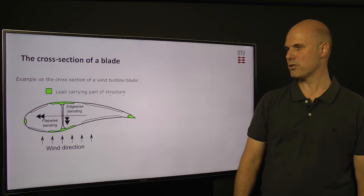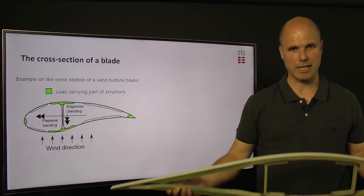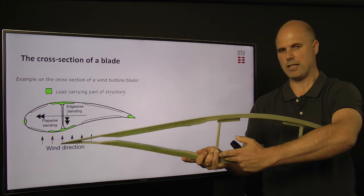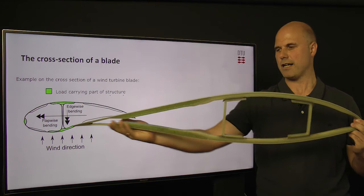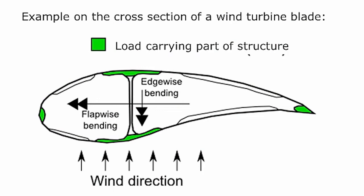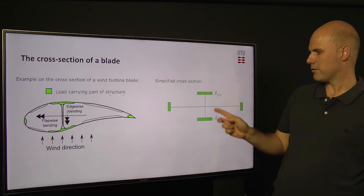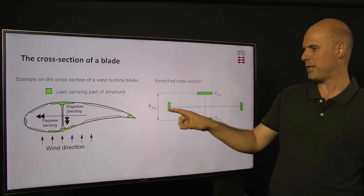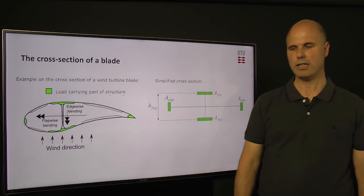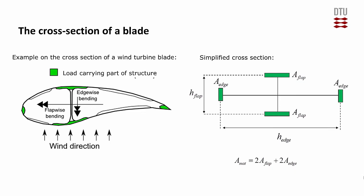Now we would like to go from the moment in the cross-section to actual stresses in the material. In order to do that, we need to look into the cross-section of a wind turbine blade. In the example shown here, the load-carrying parts are the top and bottom parts — taking care of the aerodynamic load — and the two side parts, which take care of the gravity load. These are illustrated as green points of material on the sketch. To simplify this cross-section, I have drawn a picture showing the flapwise material with a height equal to the blade thickness, and the edgewise material with a distance corresponding to the blade width. The sum of these four material areas is the total material used in the wind turbine blade.